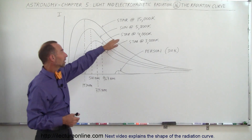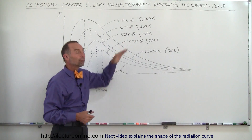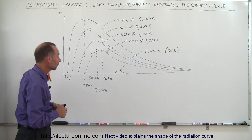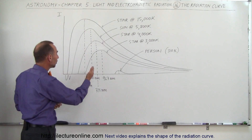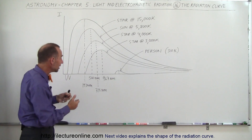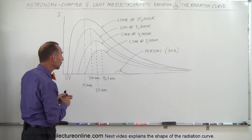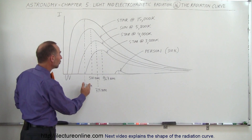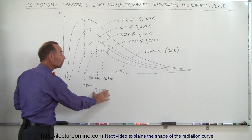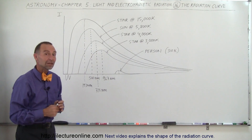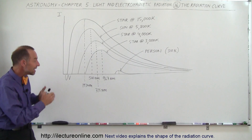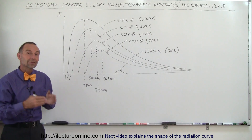Now let's say we have a star that has a temperature of 4,000 Kelvin on its surface. It does put out maybe a very small amount of UV, lots of visible light, but notice that the average wavelength is at 725 nanometers, which actually puts that in the infrared.